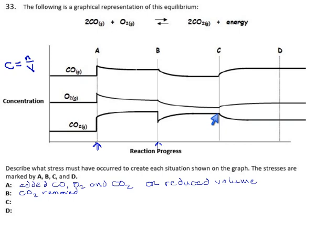What happens here? There aren't any spikes, which means we didn't add any chemical or take any chemical out and we didn't change the volume either, but the equilibrium does something. How do you change this if you're not adding or taking away any chemicals and you didn't change the pressure?